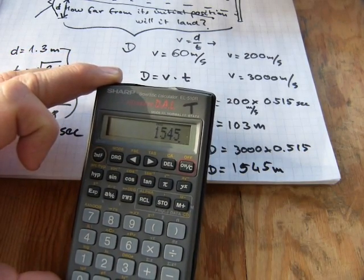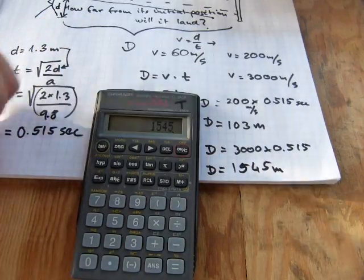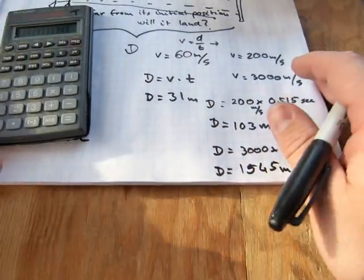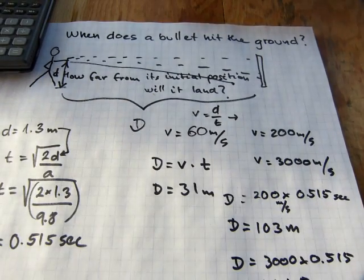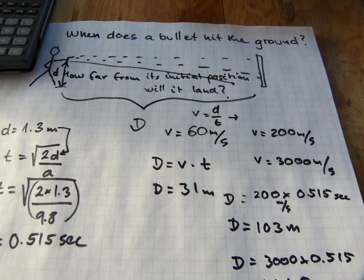It's a little shy of a mile. Okay, that's how we can calculate when a bullet hits the ground and also how far away from you will it hit the ground. Have fun guys.